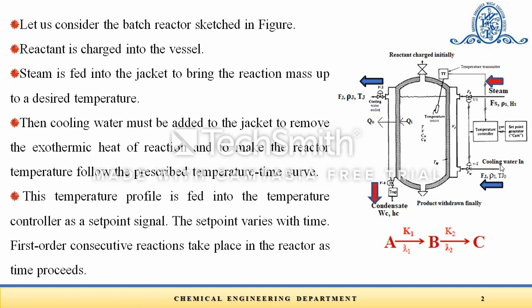This temperature profile is fed into a temperature controller as a set point signal that varies with time. The first-order consecutive reactions taking place in the reactor are A → B and B → C, with reaction rate constants K1 and K2 respectively, and exothermic heats of reaction lambda_1 and lambda_2 respectively.